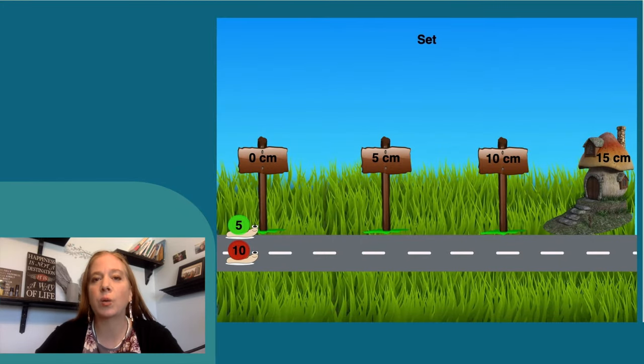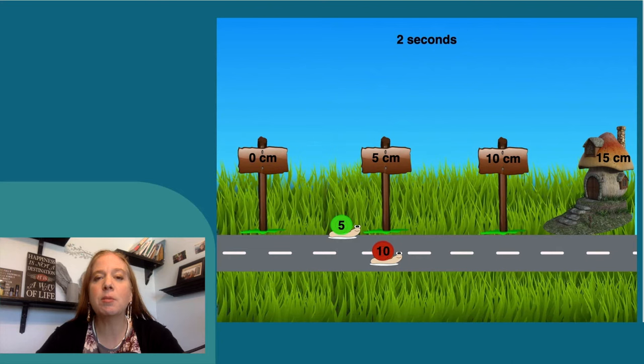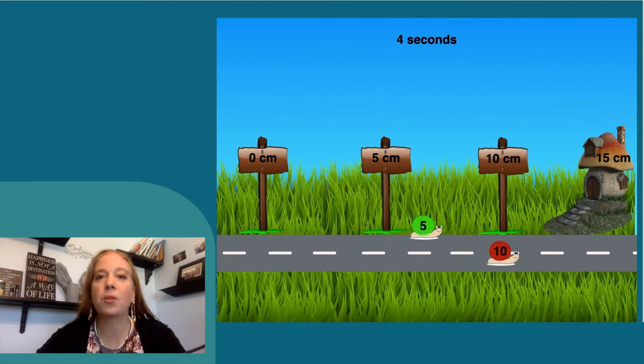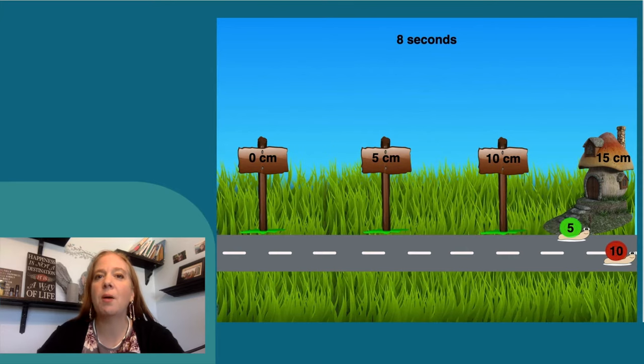Take a look at the green and red snails. They seem to be moving at a constant speed with the red snail moving a little faster. So how would that look like on a graph?